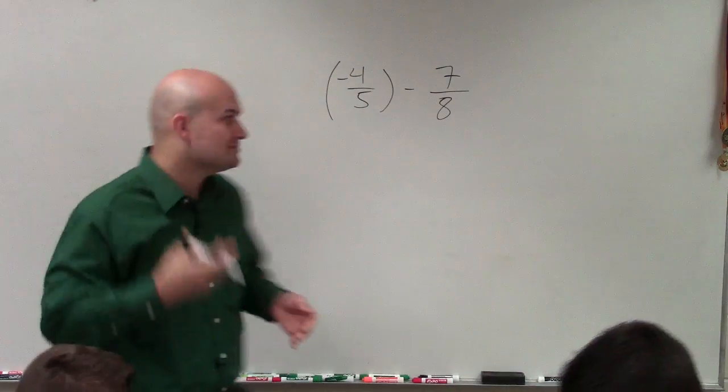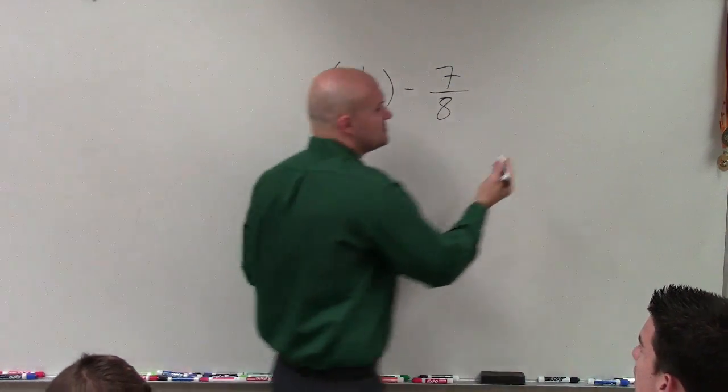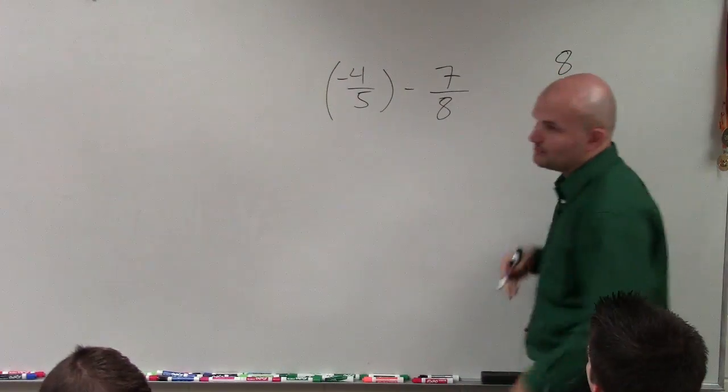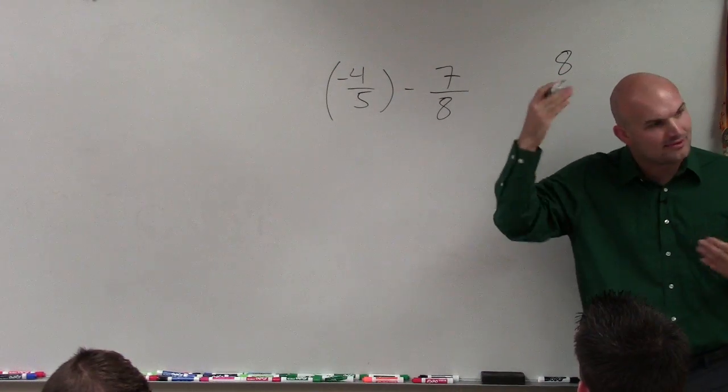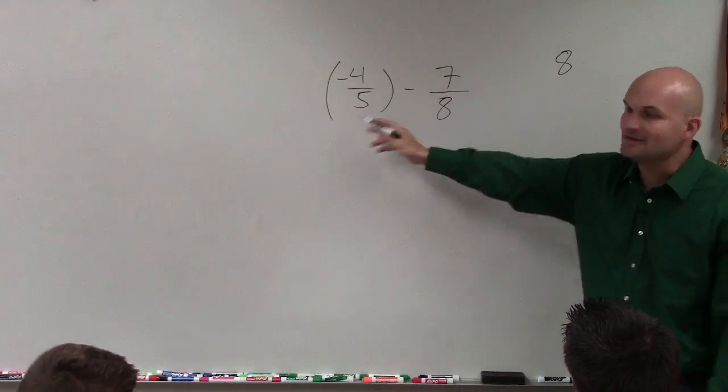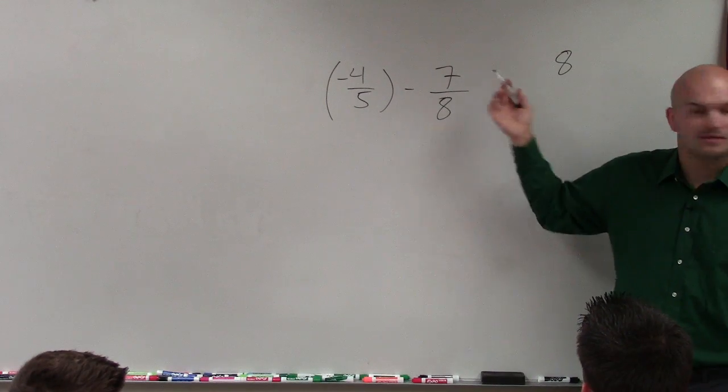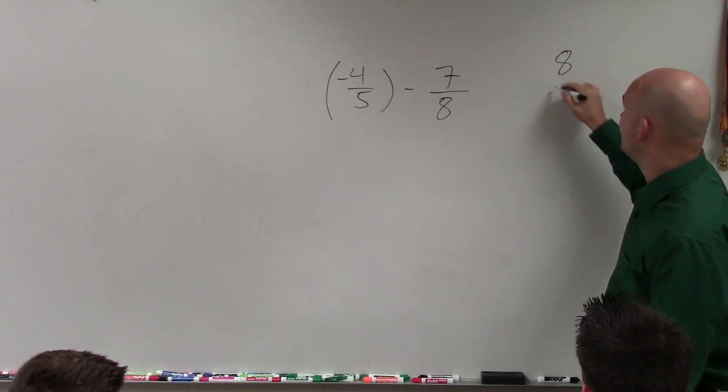So what I like to do in my head when I'm doing this is I like to pick the larger of the two denominators and write out the multiples. Now, obviously, if I'm doing this in my head, I can probably think of the multiples in my head. But let's just kind of work it out. 8, does 5 divide into 8? Not evenly, right? So therefore, that's not the least common denominator.